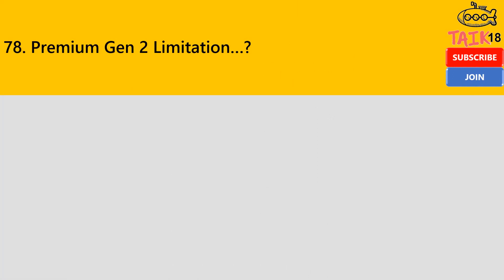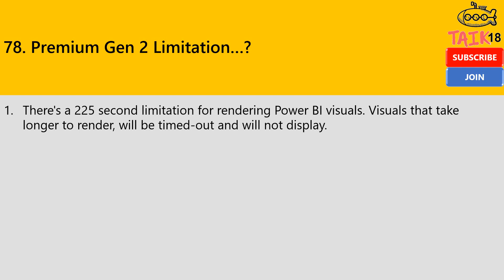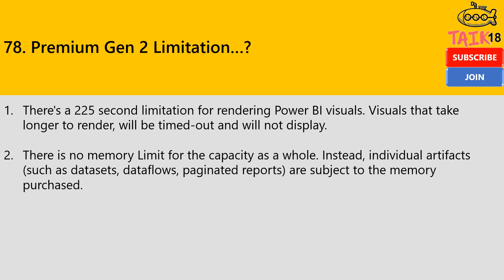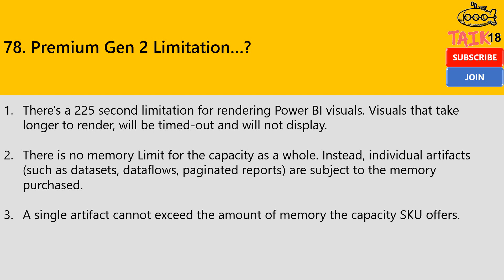What are the Premium Gen 2 limitations? We have Gen 1 and Gen 2, and the limitations in Gen 2 are: there is a 25-second limit for rendering Power BI visuals — if a visual takes longer to render, it will show a timeout error message on that particular visual. There is no memory limit for the capacity as a whole; instead, individual artifacts such as datasets, dataflows, and paginated reports are subject to memory limits. A single artifact cannot exceed the memory amount the capacity SKU offers.